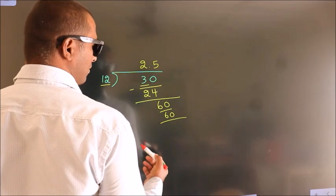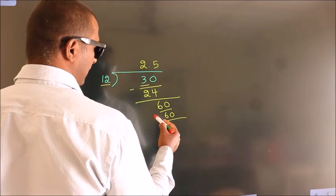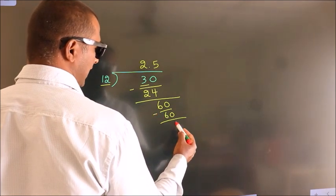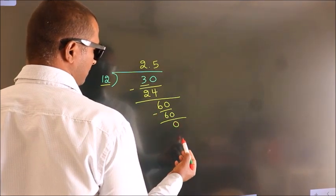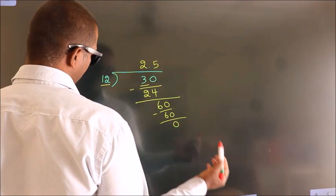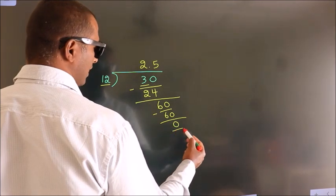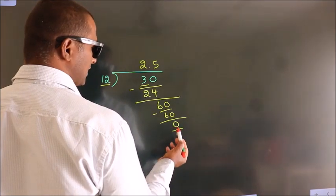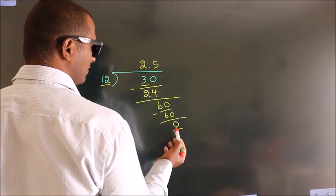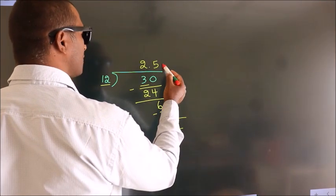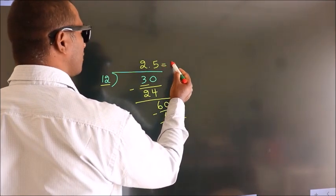Now we subtract and we get 0. Here we got remainder 0, so this is our quotient.